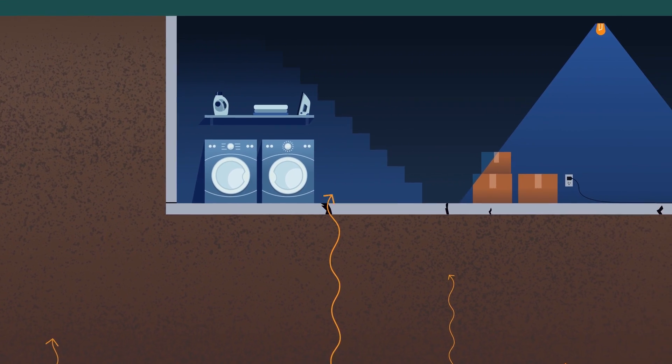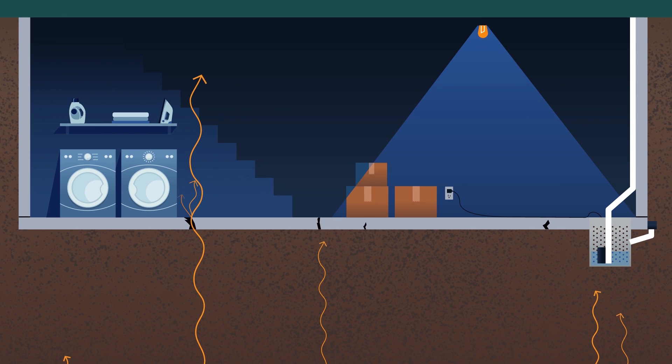These vapors can rise beneath your home and enter through small cracks and openings in your foundation, like at your sump system. This is called vapor intrusion, and it can go unnoticed for a long time.